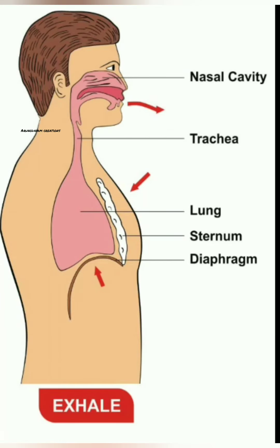So during exhalation, the diaphragm relaxes and attains its dome shape, moving towards the chest cavity. The volume of the chest cavity decreases, the pressure between air molecules in the lungs increases, so air molecules move from the lungs to outside — this process is called exhalation.